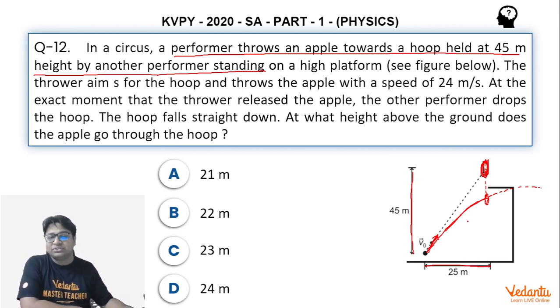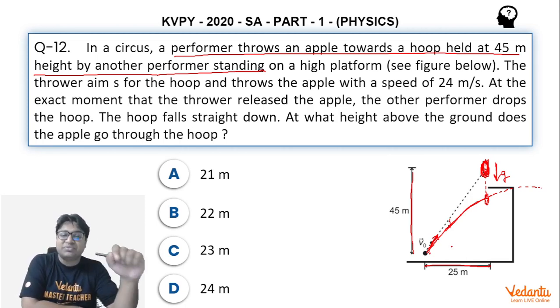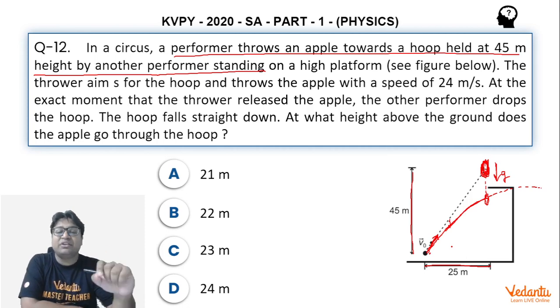Why does that happen? To understand this, the hoop was having an acceleration of g in the downward direction. Even this apple or bullet was having an acceleration in the downward direction which is also equal to g. So what happens is that their relative acceleration becomes zero.